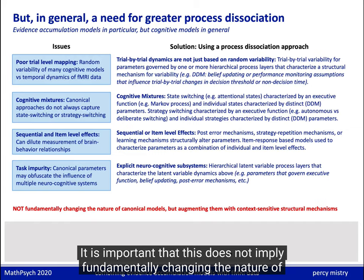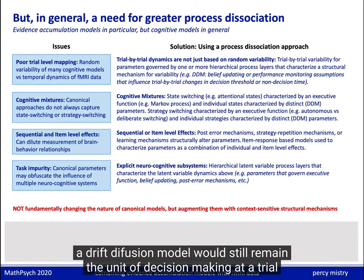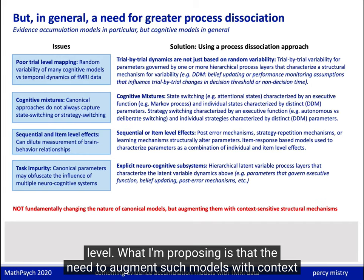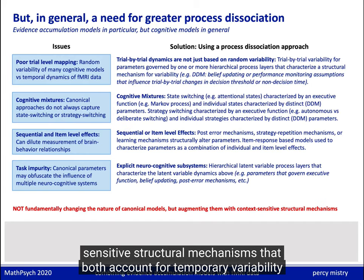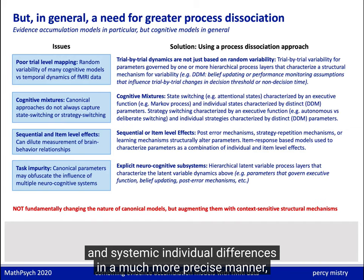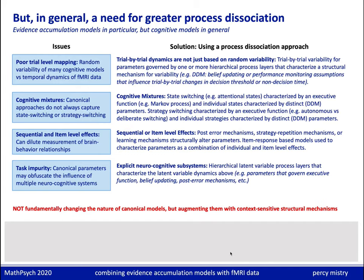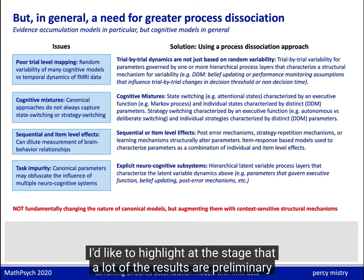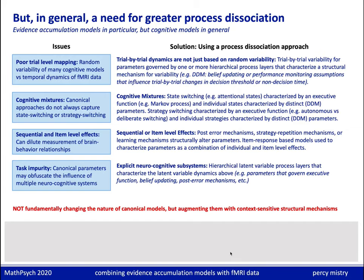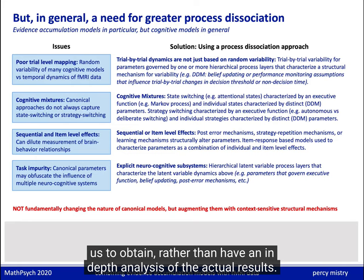It is important that this does not imply fundamentally changing the nature of the decision-making model. For instance, a drift diffusion model would still remain the unit of decision-making at a trial level. What I am proposing is the need to augment such models with context-sensitive structural mechanisms that both account for temporal variability and systemic individual differences in a more precise manner, allowing a more precise functional measurement of brain-behavior relationships. Let's see what a model like that would look like across two different tasks. Many of the results here are preliminary and may be subject to validation and revision.